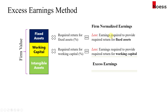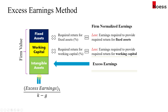Since we've subtracted the two main uses of capital, whatever is left — the excess earnings — will be attributable to the intangible assets. Since we can link the excess earnings to the intangible assets, we can value them using a constant growth assumption. The intangible asset value equals the excess earnings for the coming period divided by a cap rate (K minus G), where K is the required return on intangible assets — higher than for fixed assets and working capital — and G is the constant growth rate of the excess earnings.